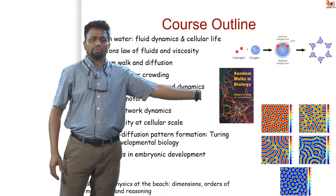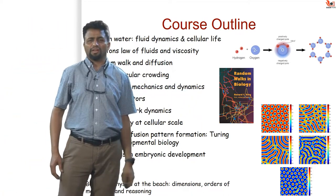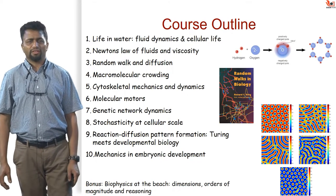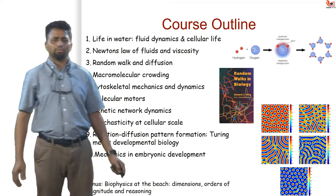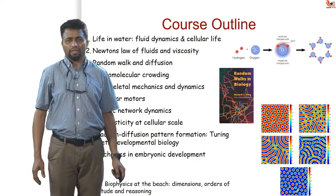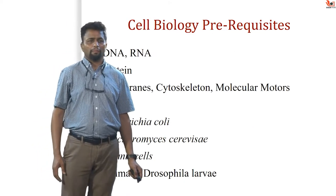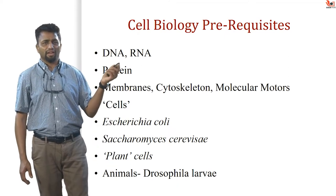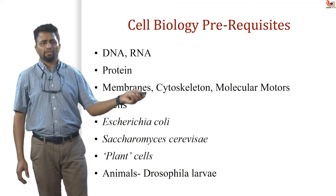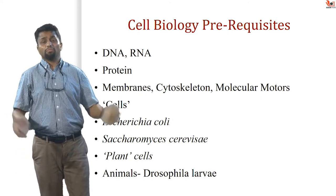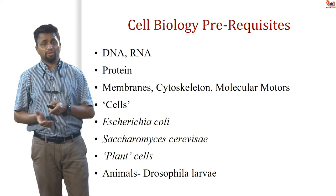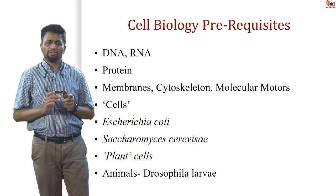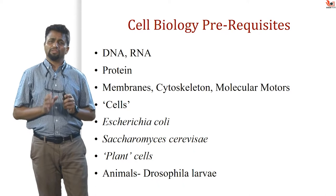These pictures are indicative of one of the books I am going to follow quite a bit: Random Walks in Biology. I urge you to try to get a copy of it. The cell biology prerequisites are that you need to know what DNA, RNA, proteins, membranes, cytoskeletal motors, and molecular motors are. You will find these in biochemistry textbooks by Leninger and Alberts, and the cell biology textbook by Alberts — these are the classic references.